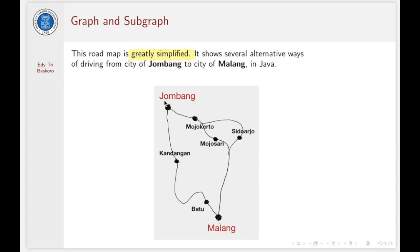Another example with which we are familiar is a route map. This route map here is greatly simplified. This diagram is also a graph. It shows several alternative ways of driving from the city of Jombang, this is my hometown, to go to the city of Malang in Java.